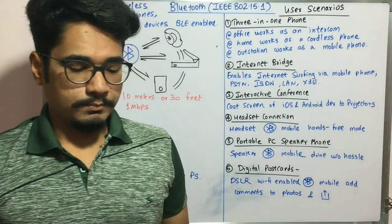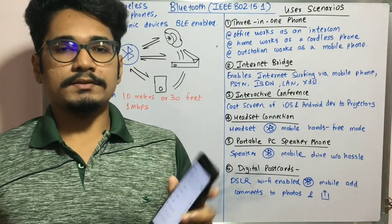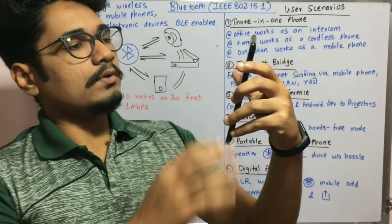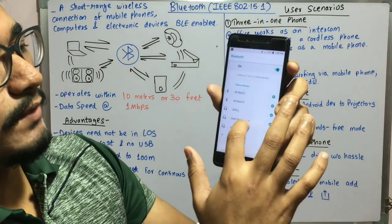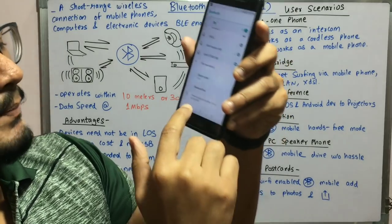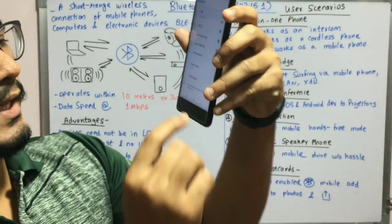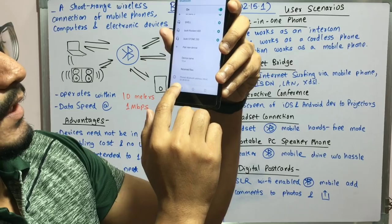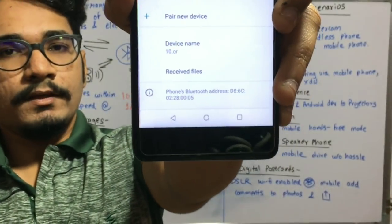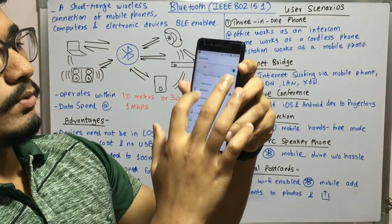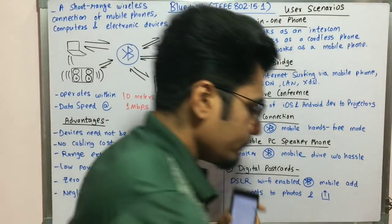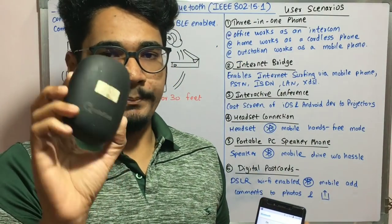I've brought my smartphone to show how the Bluetooth panel looks on Android. You can see the various paired devices, the device name, and the phone's Bluetooth address — something like D86C:02:28:00:05. This is how the Bluetooth panel looks in Android, and here you can see the various connected devices including my Bluetooth speaker.